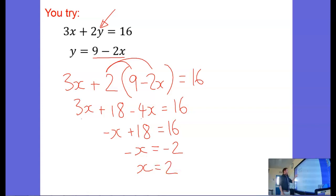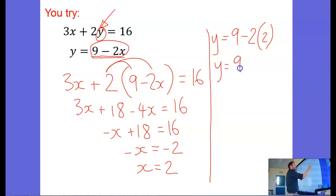So again, all I did was I took what y equaled and I swapped it in to the other equation. We haven't finished yet, so let's find what y equals. And we know that y equals 9 minus 2x. 9 minus 2 lots of 2 is 4, so y equals 9 minus 4, or y equals 5.